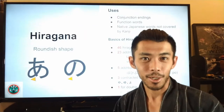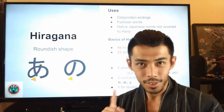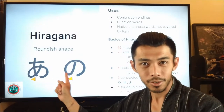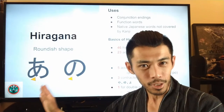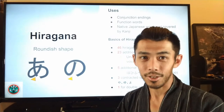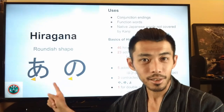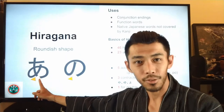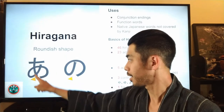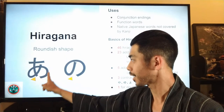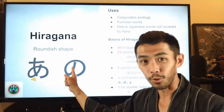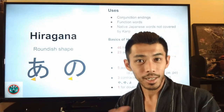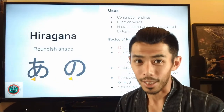The first thing about hiragana is that when you look at the hiragana characters you can tell they're different from katakana and kanji because they tend to be roundish in shape. For example, this is hiragana for 'a' — you notice how it's very curvy. This is hiragana for 'no' — you also see it's very curvy. So hiragana tends to be roundish in shape.